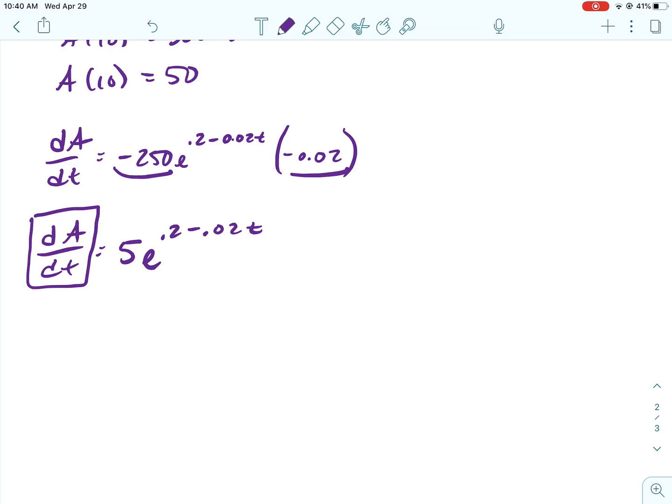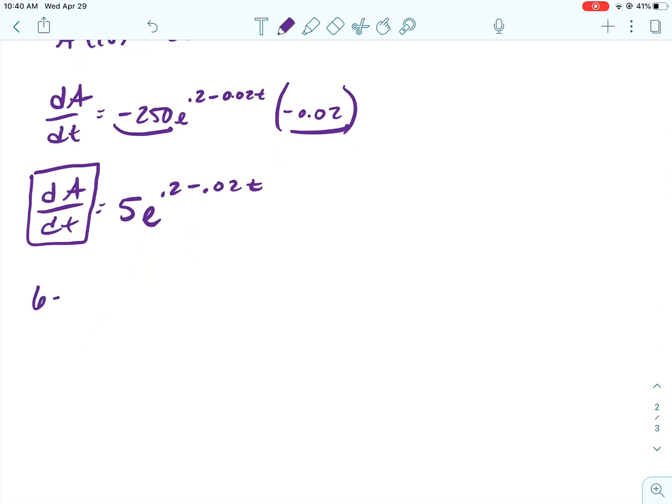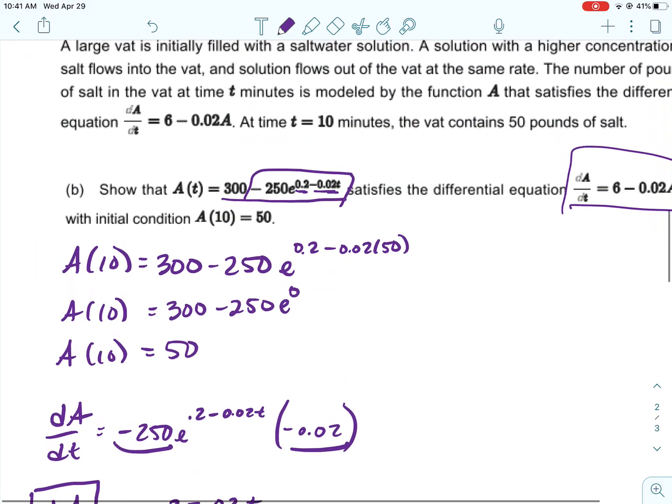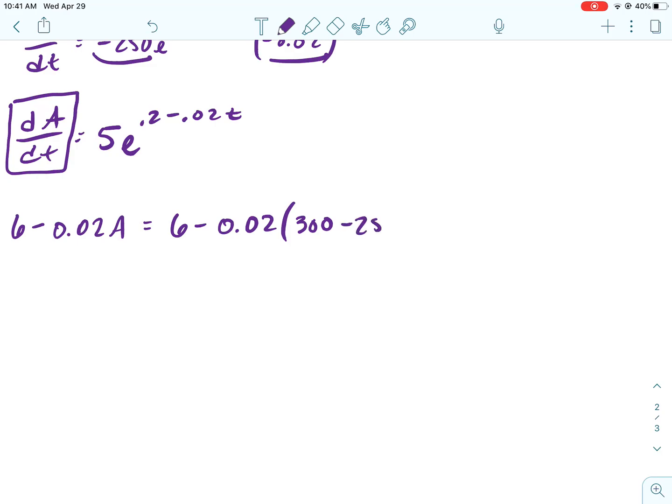Now that definitely doesn't look exactly like that one, so we need to show that they are the same. So what I'm going to do in the place of dA/dt, I'm going to put it in with that equals. So 6 minus 0.02A, and then that's the same as 6 minus 0.02A. And then take what A was. So A is that 300 minus 250, that stuff.